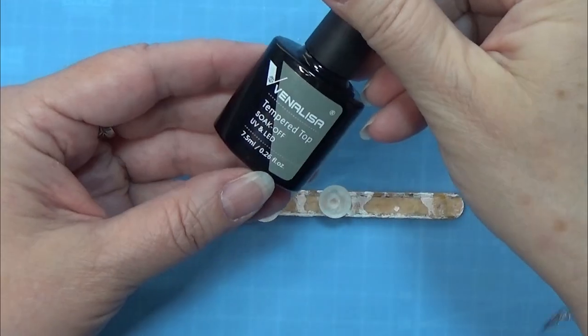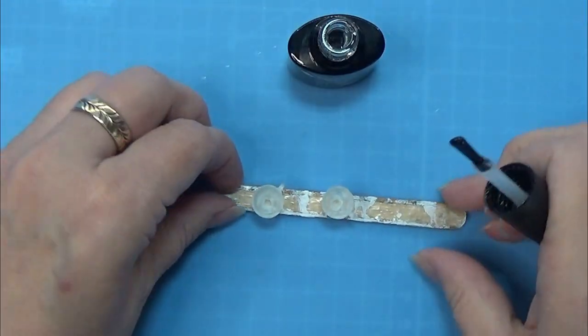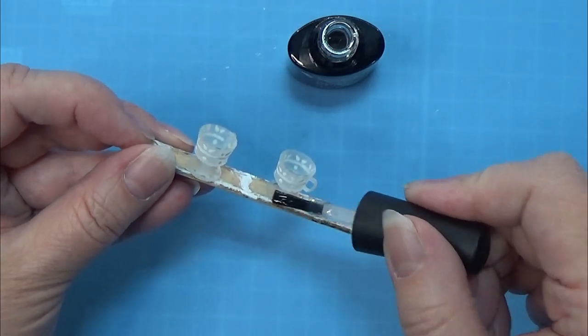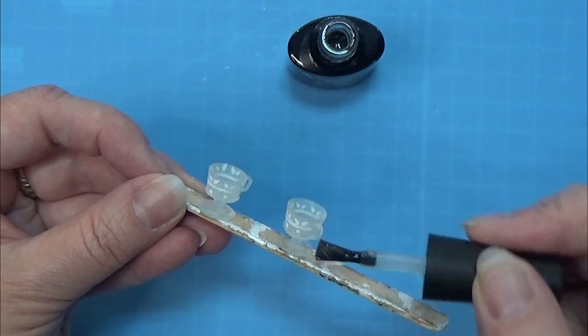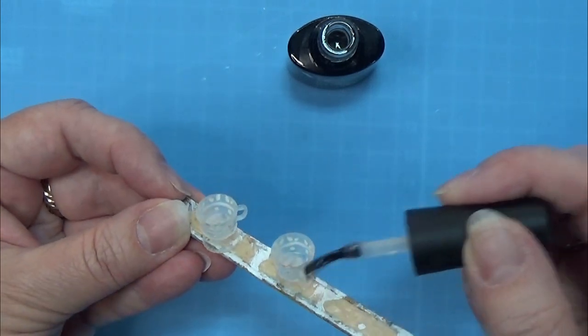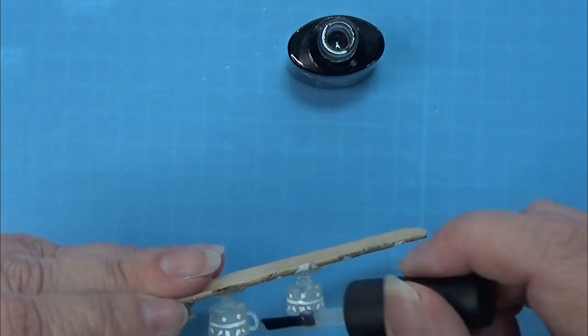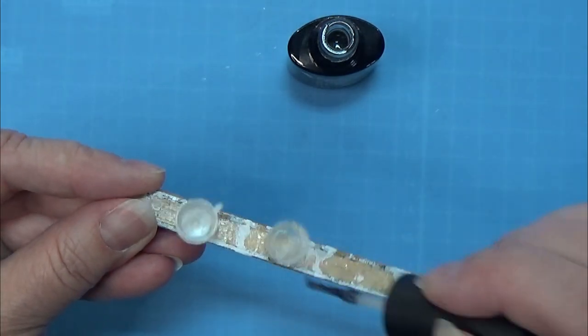When the paint has all dried, I am going in with my nail gel. This is a non-wipe nail gel. And I am giving the whole cup or glass with this, so it is going to get really translucent like glass. And then I'm putting it into my UV light.